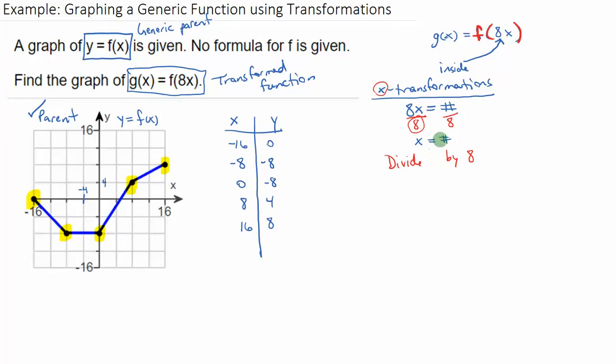So divide by 8. But since it's an x transformation, I recommend that you say divide x by 8 so you remember to do it to x's. So that is our single x transformation. Now our y transformations, we search outside of the f, the parent function, and there's nothing happening outside. So what that tells us is there are no y transformations.